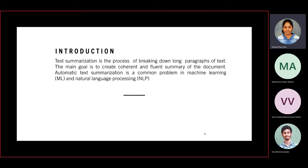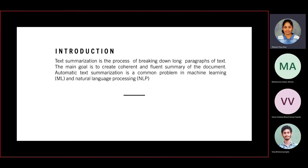Text summarization is a technique for generating a summary of volumes of text, focusing on main sections that convey useful information without losing the overall meaning. Automatic text summarization aims to transform lengthy documents into shortened versions, which is difficult and costly. Machine learning algorithms help comprehend documents and identify parts that have major impact before producing the required summarized text.